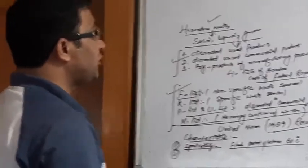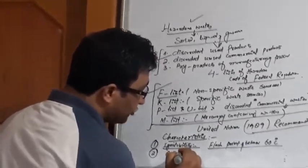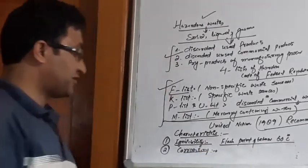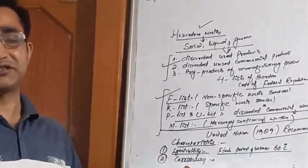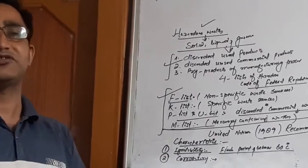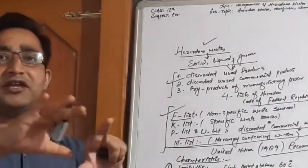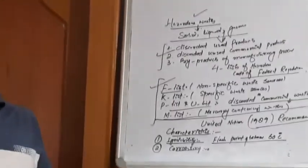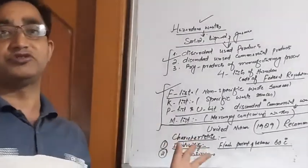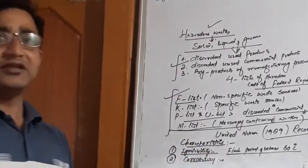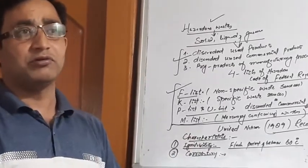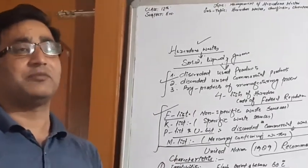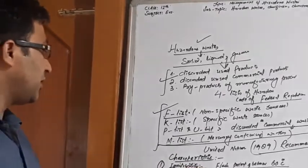The other property is corrosivity. Those which are acidic or basic, which make acidic solutions or basic solutions. These wastes whose pH is either less than 2 or more than 12, such substances are called corrosive. These are the corrosive solid wastes and they are also dangerous, they are also harmful. They may cause the corrosivity of the containers, of the metallic containers and other substances as well.